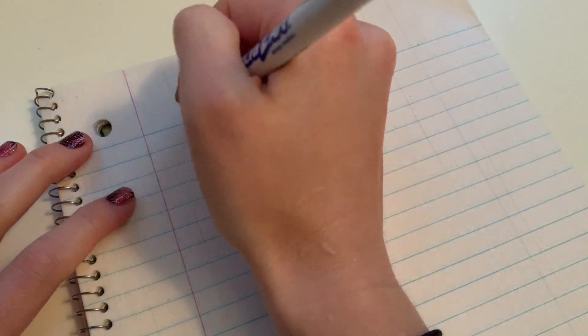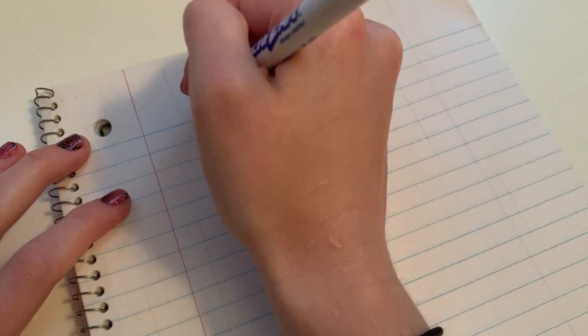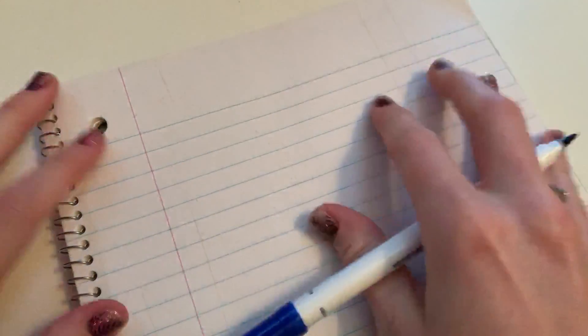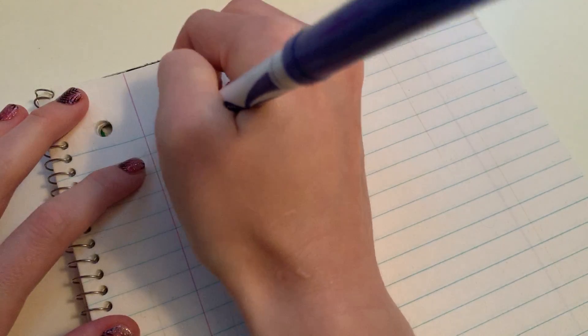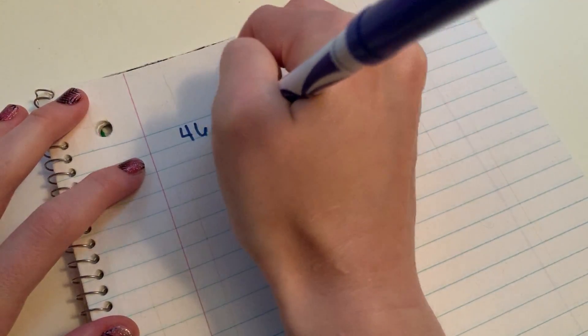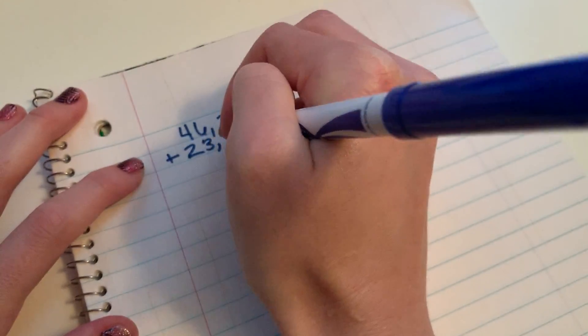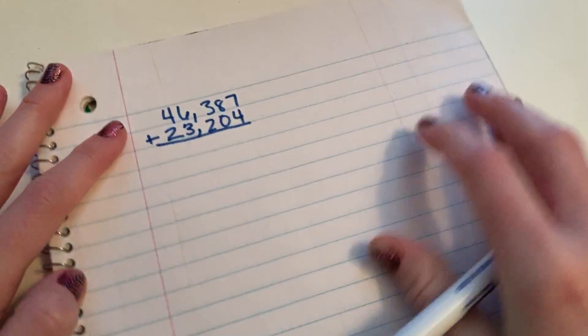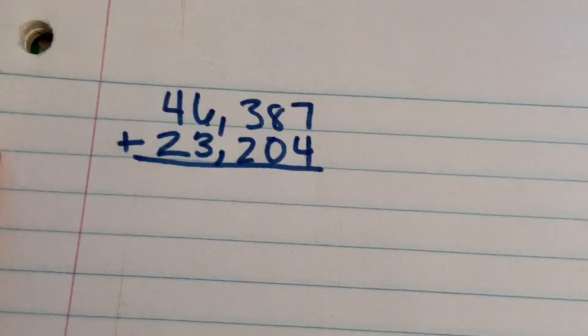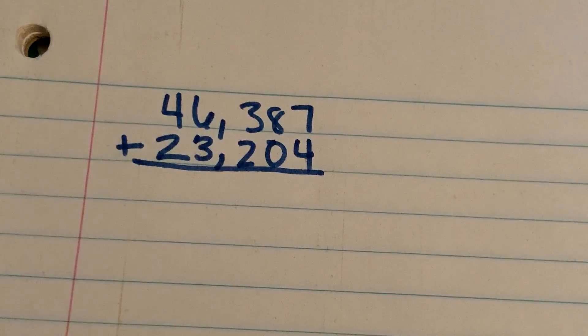So the first thing you're going to notice that might be a little interesting is whenever you're doing carryovers in Zurn. So, for example, here's this problem. Okay, so I have 46,387 plus 23,204.